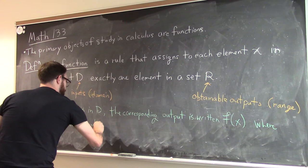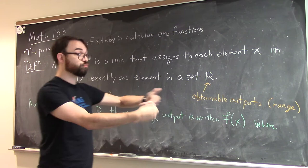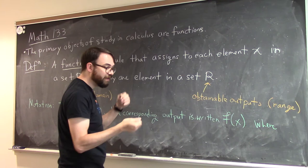So the idea is that you take your input x, you apply the rule f, and that tells us what is our obtained output.